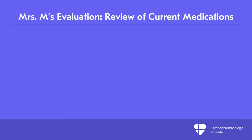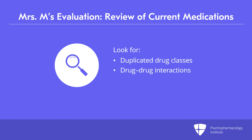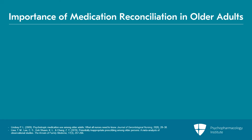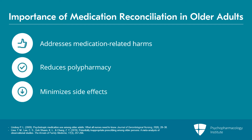As part of your evaluation, you do a thorough review of her current medications, looking across the different drug classes for duplications, drug-drug interactions, or medications with specific side effects of particular concern. We'll come back to this case a little bit later. Doing a thorough medication reconciliation is key to avoiding and addressing medication-related harms — looking to remove medications in addition to just starting them, and thinking about ways to reduce polypharmacy and minimize potential side effects to older adults.